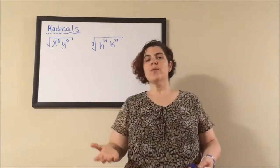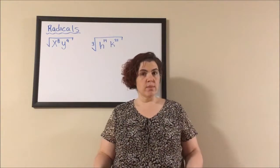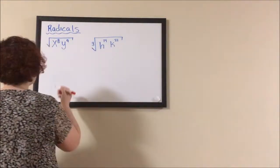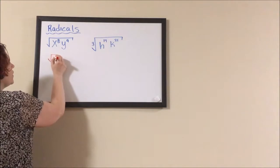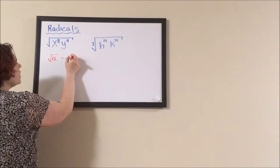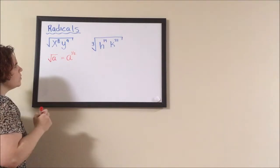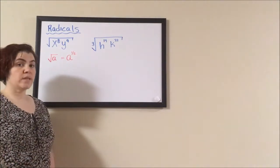Variables under a radical tend to be a little bit easier than numbers. This square root of a variable can be thought of that number to the exponent one-half. What does this mean?